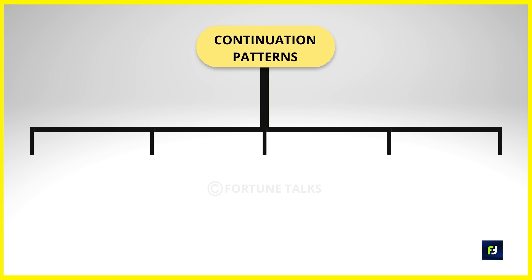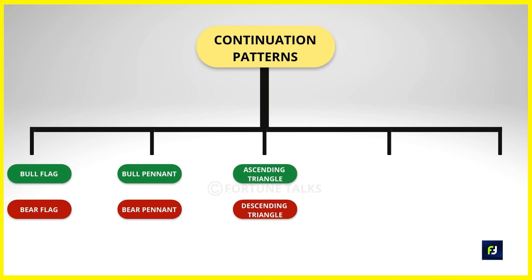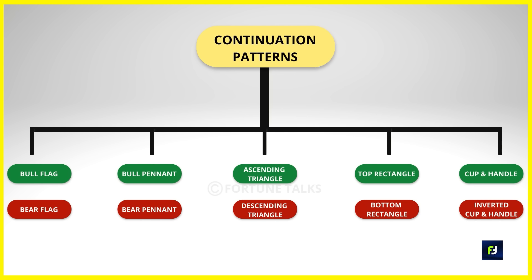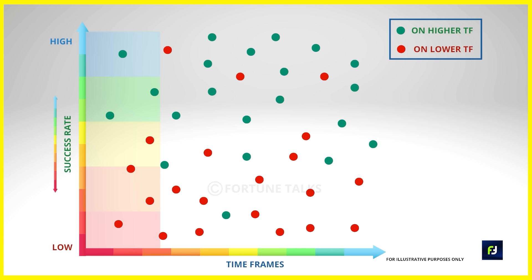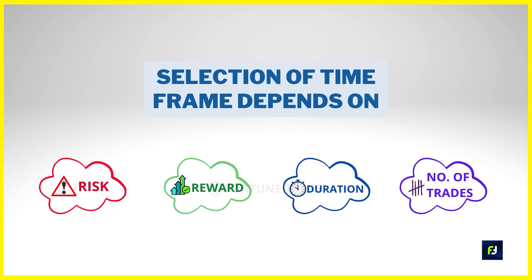We will discuss five patterns and their subcategories: flag patterns, pennants, ascending and descending triangles, rectangle patterns, and finally cup and handle and inverted cup and handle patterns. Before moving on, one important point about time frames — all these patterns form in almost all time frames, from intraday to swing to positional. They work better as the time frame increases because it takes more time to form and more people become aware of them. The time frame you choose will depend on your trading style, the duration you want to hold positions, and your expectations.